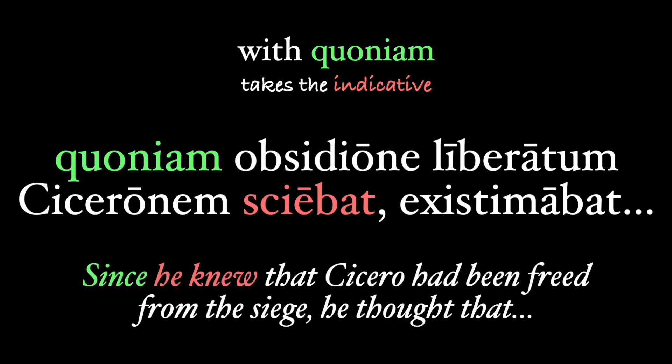In this one from Caesar: since he knew that Cicero — that's Quintus Cicero, Marcus's brother — had been freed from the siege, he thought that, etc. We have the authority of Caesar the writer that Cicero was actually rescued from the siege.